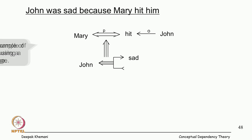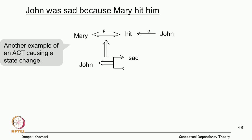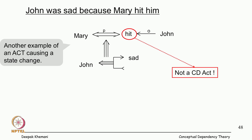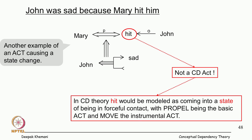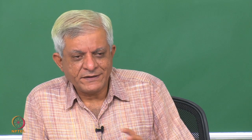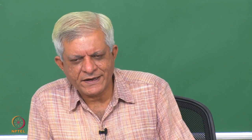'John was sad because Mary hit him' — we model this as a state change. Some action is causing a state change: John has gone from some state to being sad, and Mary did the action of hitting. Hitting is not a CD act — in CD theory it would be modeled as coming into a state of being in forceful contact, with propel as the basic act and move as the instrumental act. We represent this as a causal relation: Mary hit John — however we represent 'hit' — which caused John to go from a state of not-sad to sad.